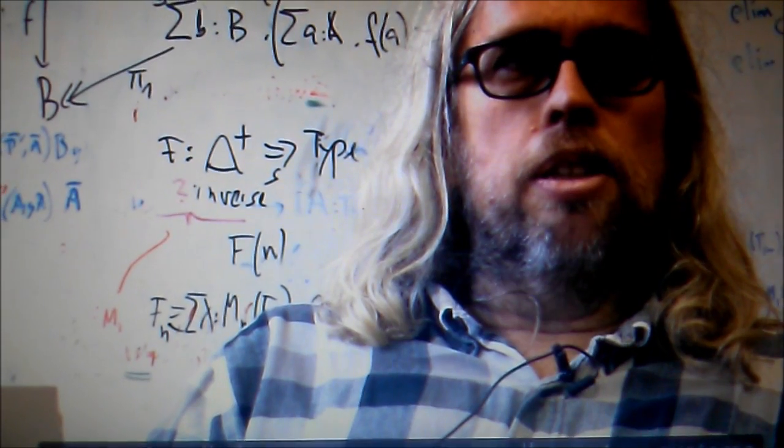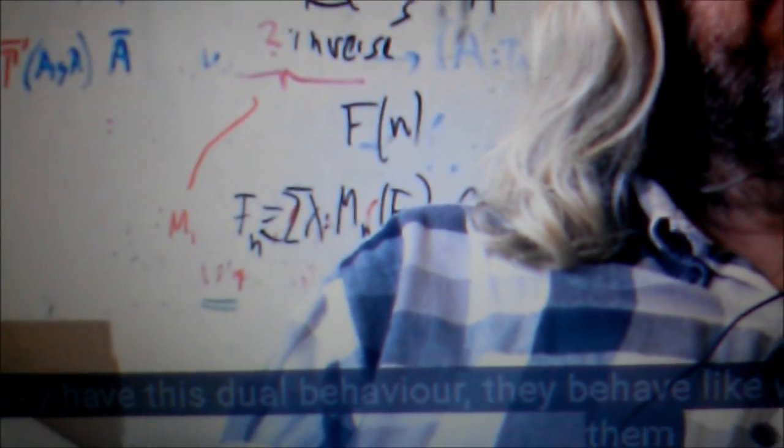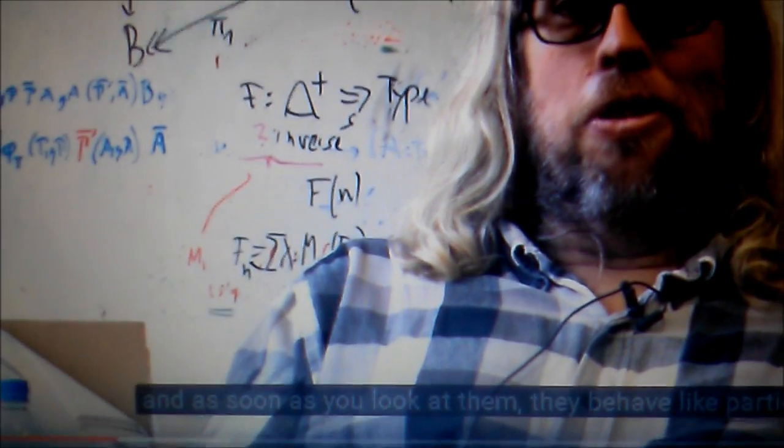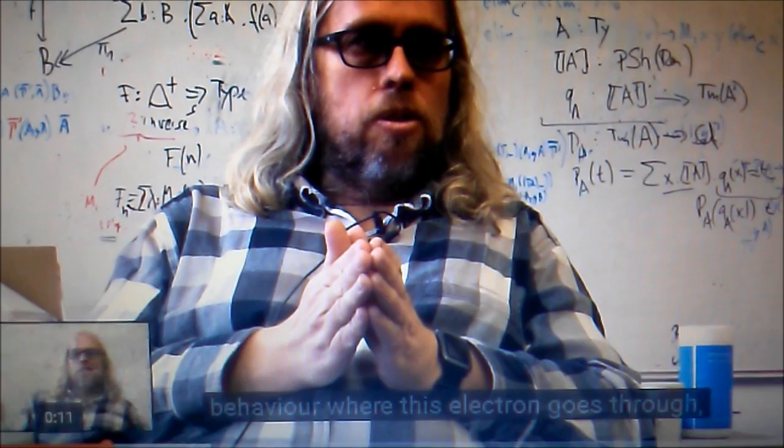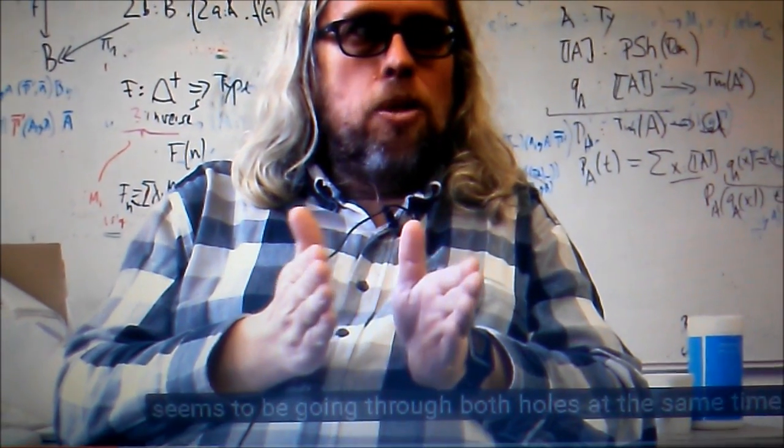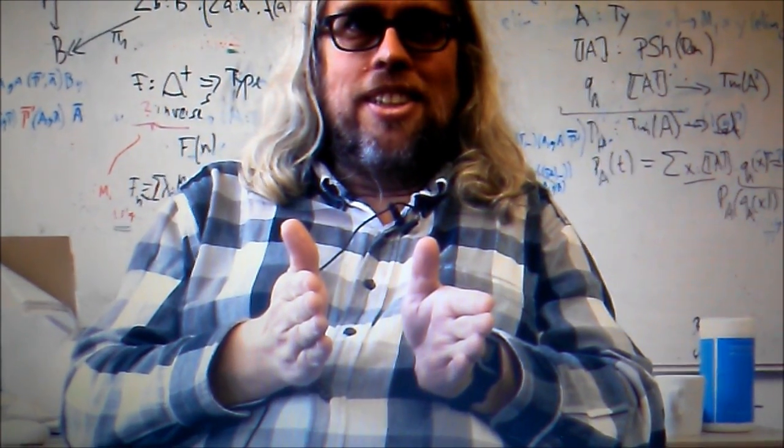So all quantum systems, they have this dual behavior. They behave like waves, as long as you don't look at them. And as soon as you look at them, they behave like particles. Behavior where this electron goes through, seems to be going through both holes at the same time. It's really doing something in parallel. Right.